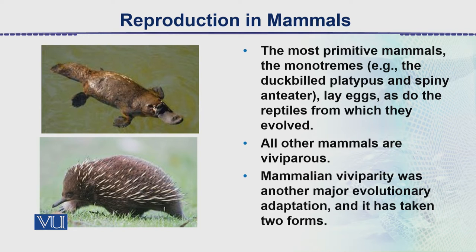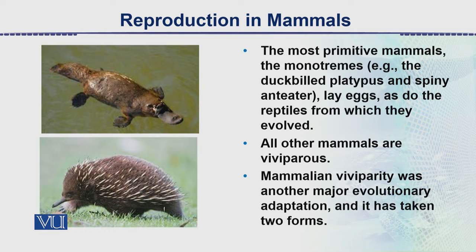Monotremes lay eggs as do the reptiles from which they evolved. This is why their characters carry traits of both reptiles and mammals. All mammals are viviparous — viviparous animals have internal development and there is contact with the mother.